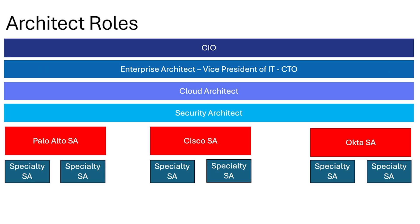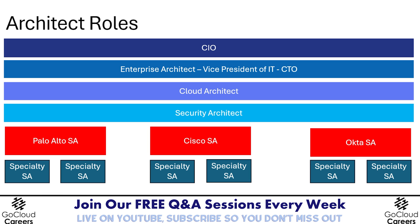To begin, I'd like to talk about the various architecture roles, because that's going to help explain what we do as Security Solutions Architects. In this diagram, you can see various architectural roles in a normal organization. At the top of the technology organization, we're going to have a Chief Information Officer — the executive responsible for the organization's IT strategy and operations.